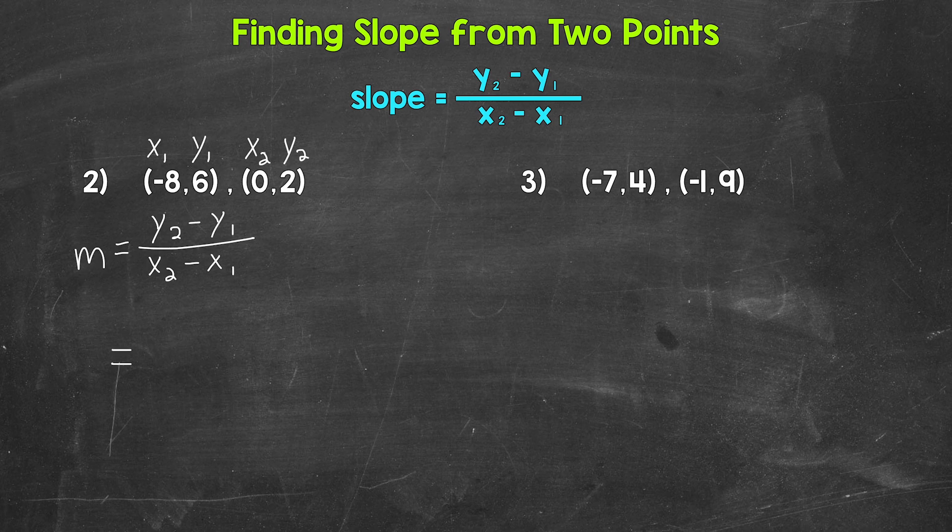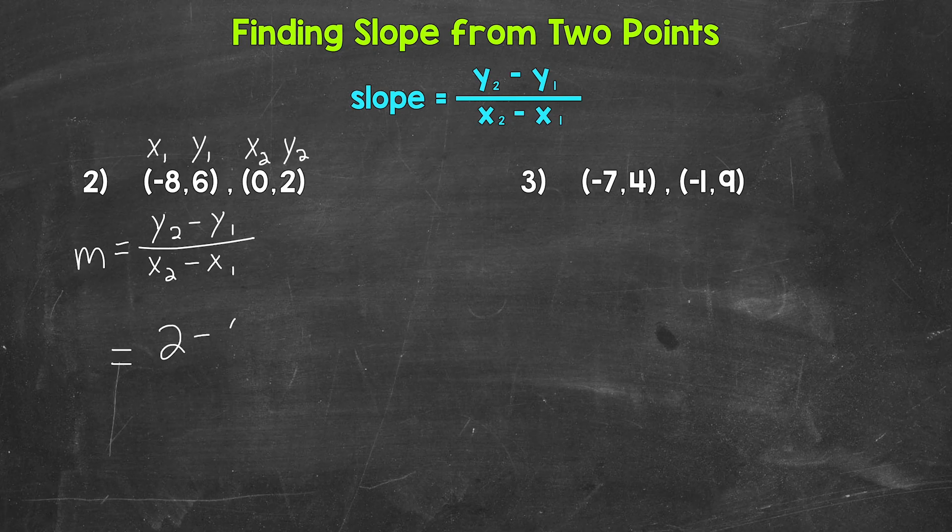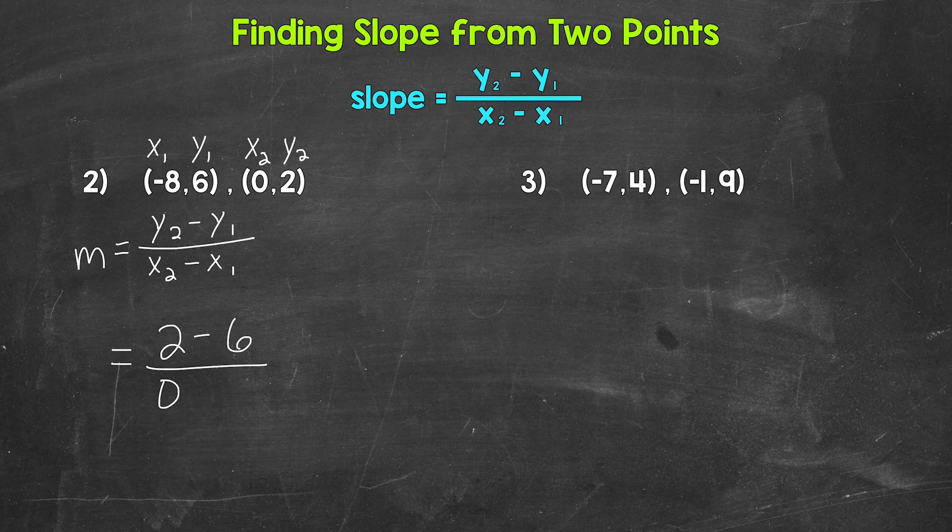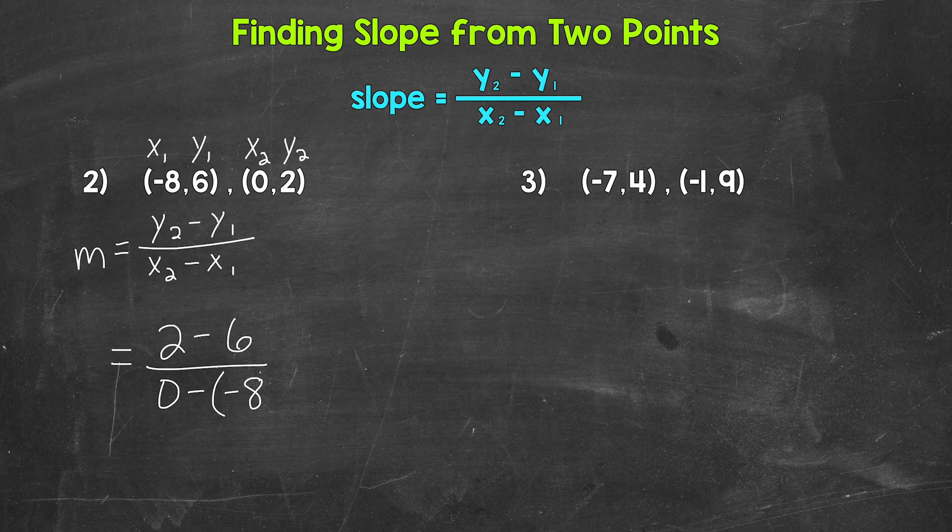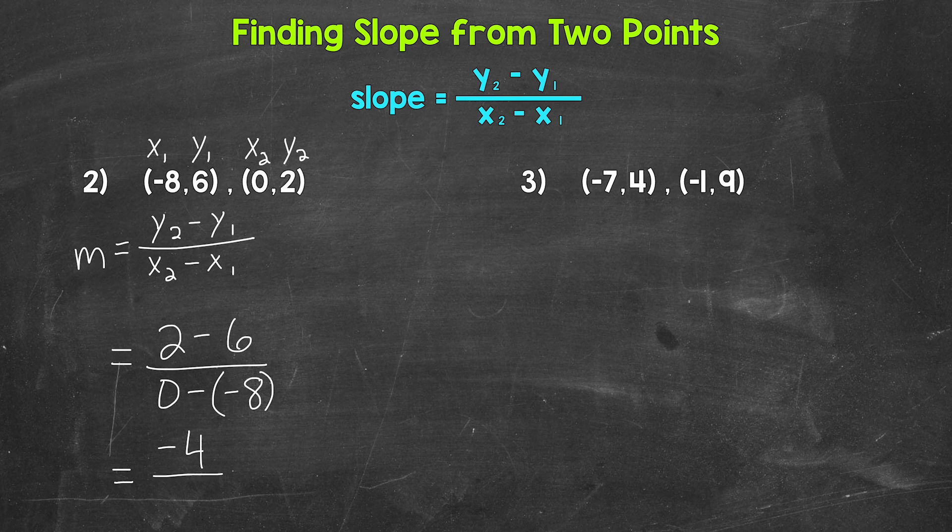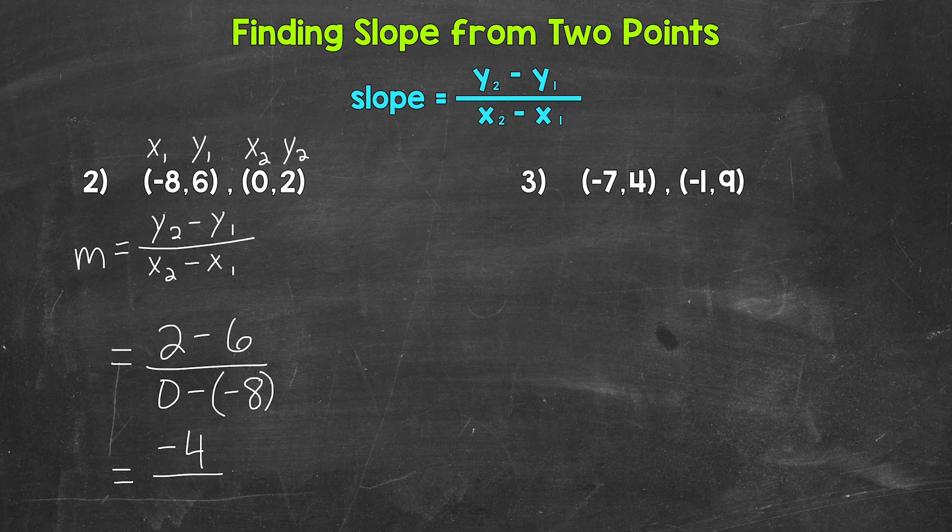Now we can plug in y2 is 2 minus y1 is 6 over x2 is 0 minus x1 which is negative 8. And I'm putting negative 8 in parentheses there. Just so it's clear, we are working with a negative. And it doesn't get lost next to the subtraction sign. Now let's subtract. 2 minus 6 gives us negative 4. And then we have 0 minus negative 8. Now whenever we have subtraction problems involving integers, and we have positives and negatives, it can be helpful to add the opposite. And this is one of those problems where this can be helpful. So we add the opposite. The opposite of negative 8 is positive 8. So we have 0 plus 8, which is 8. And that's our slope. Negative 4 over 8.